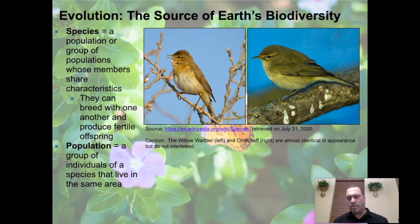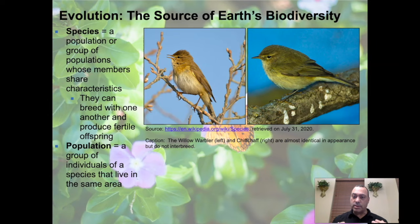Just because an animal has four legs, walks around, and eats grass doesn't necessarily mean it's the same species as other animals with four legs that eat grass. For example, a wildebeest and a horse are not the same species — they cannot breed with one another and produce fertile offspring. Horses find other horses; wildebeest find other wildebeest.